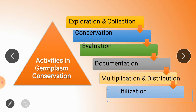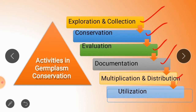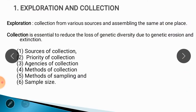The next topic covers activities conducted in germplasm collection. There are mainly six activities related to germplasm conservation: first is exploration and collection, second is conservation activity, third is evaluation, fourth is documentation, fifth is multiplication and distribution, and sixth is utilization. We are going to describe each one in detail. The first one is exploration and collection.